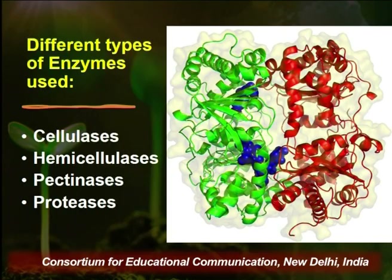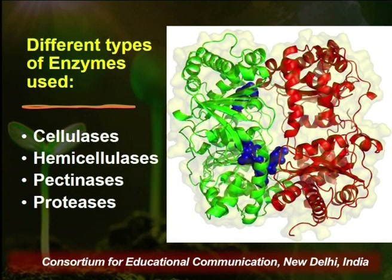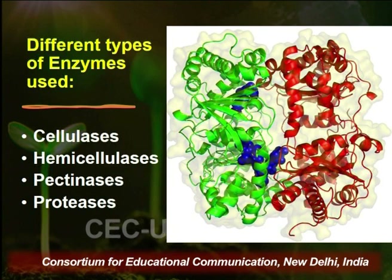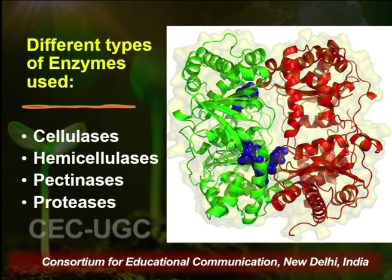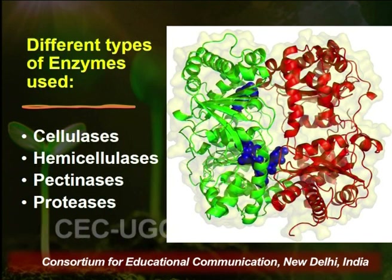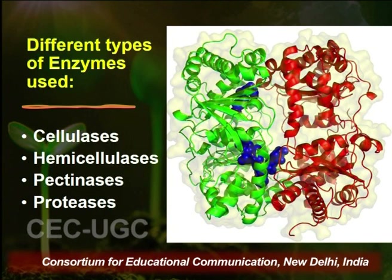There are different types of enzymes used in this process. The cell wall has different components — cellulose, hemicelluloses, pectins, lignin, and proteins — so we use different enzymes. We use cellulases for cellulose, hemicellulases for hemicellulose, pectinases for pectin, and proteases for structural proteins. Using mixtures of these enzymes, such as cellulases with pectinases, has shown better results, and commercial enzyme cocktails are now available.